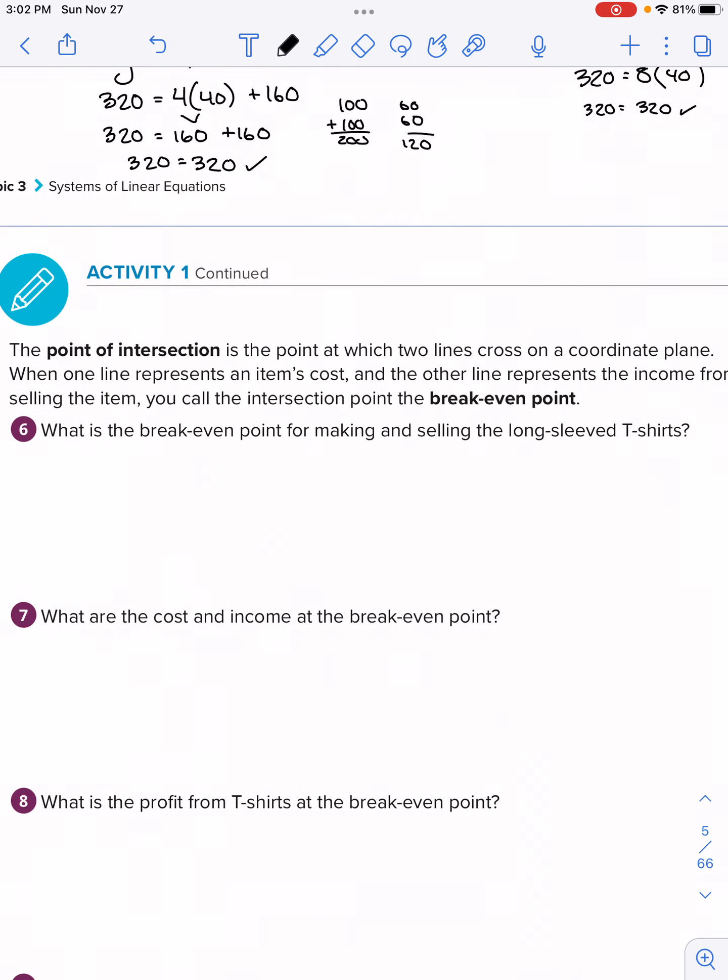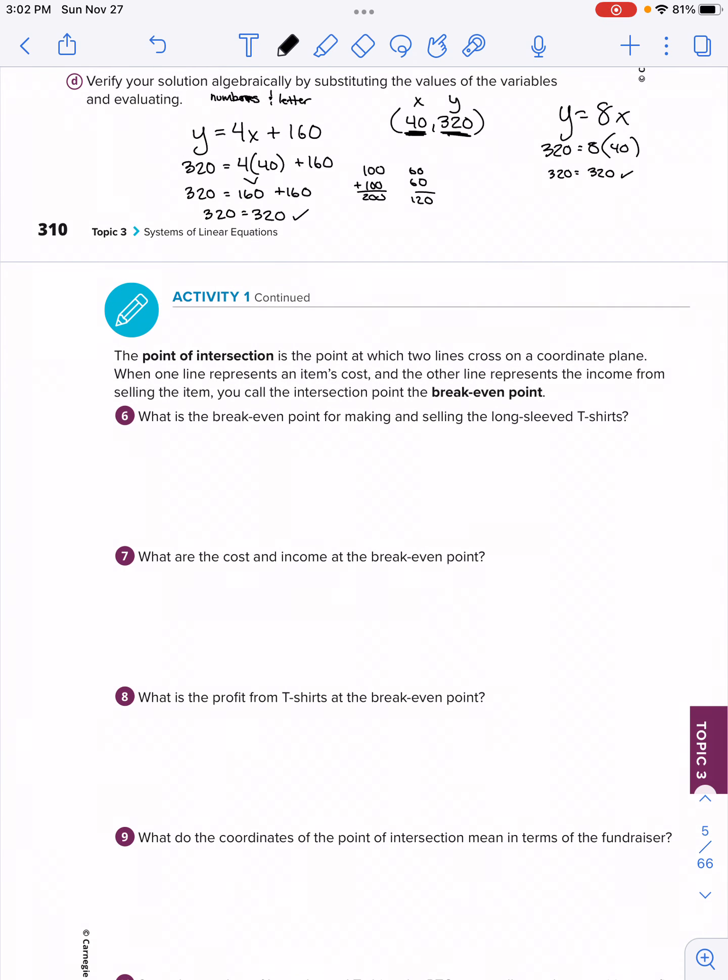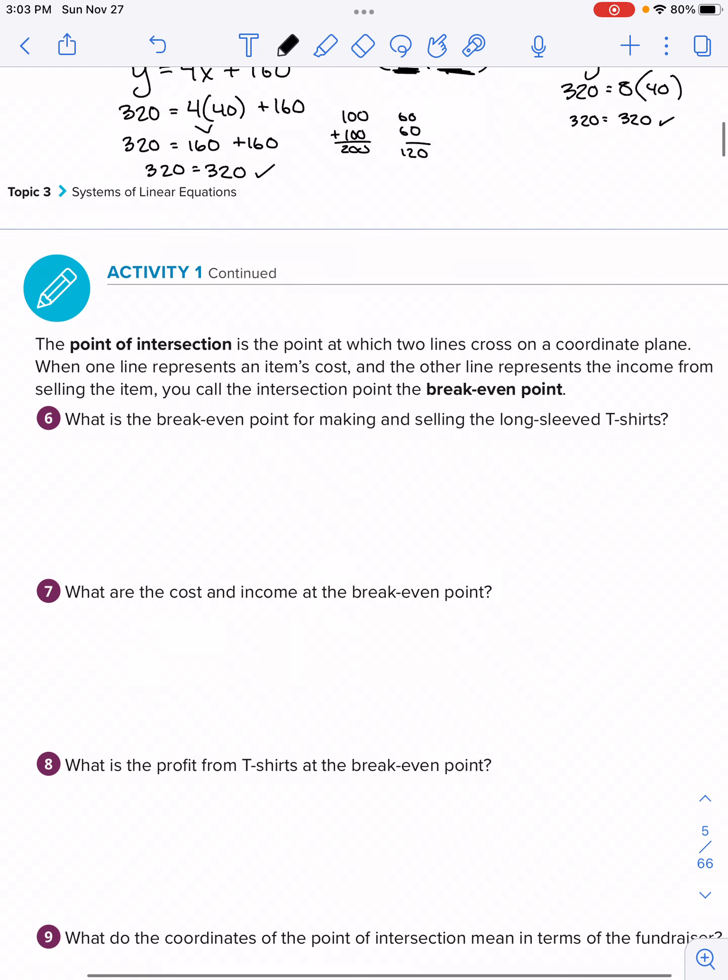So still continuing on to the last page here for activity one, that's page 311. And then we'll call it from there. A couple of key vocabulary terms. It says that the point of intersection is the point at which the two lines cross on the coordinate plane. So an example here, if I have two lines, that's the point of intersection. When one line represents an item's cost and the other line represents the income from selling the item, you call that the intersection point, the break-even point. When you go from negative into now positive or vice versa. Number six: what is the break-even point for selling and making the long sleeve t-shirts? The break-even point is (40, 320).